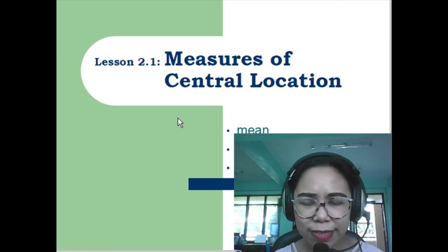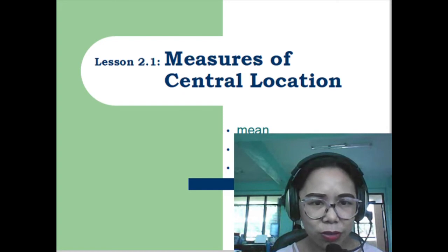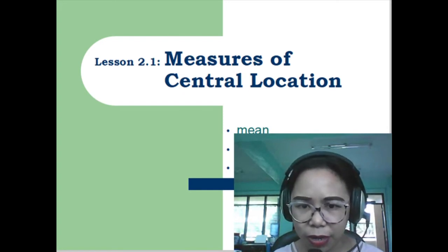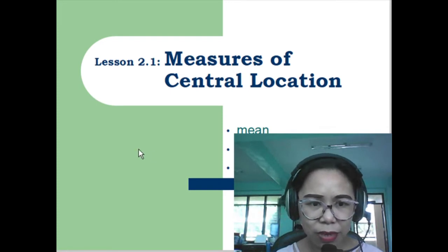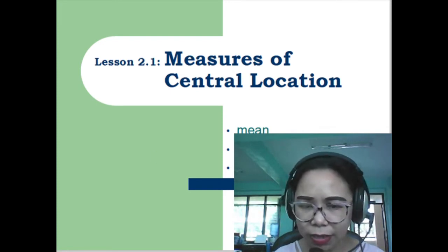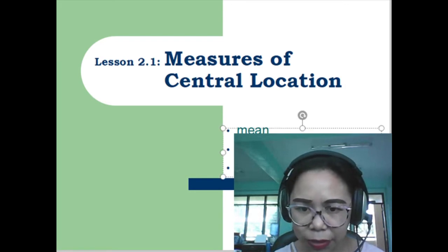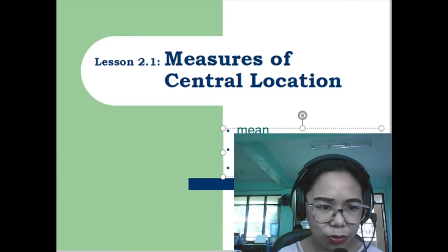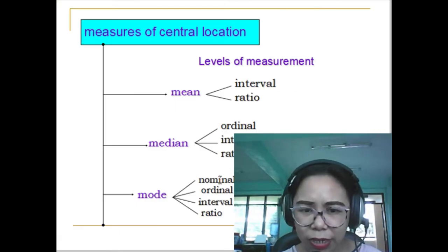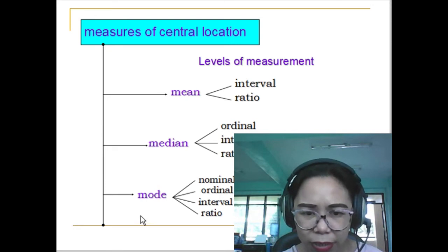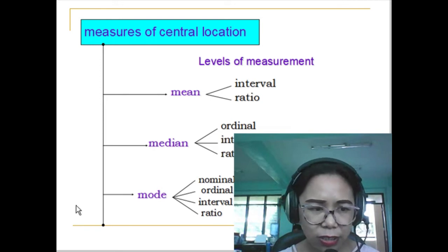This time we will continue to discuss the third measure of central location, which is the mode. In the previous video lecture, we discussed the mean and the median given grouped and ungrouped data. This time we will discuss an example applying the concept of the mode. If the level of measurement of your data is at least nominal, the mode as a measure of central location is applicable.